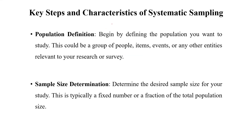The key steps and characteristics of systematic sampling we should know: first, we should know about population. Begin by defining the population you want to study. This could be a group of people, items, events, or any other entities relevant to your research or survey.